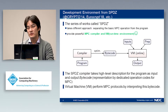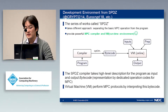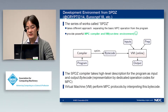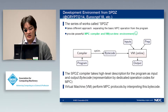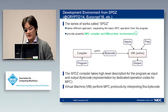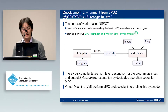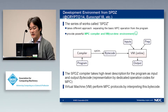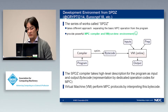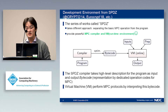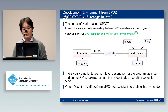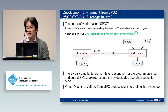In contrast to previous works, there is a series of works called SPICE, which took a different approach. Their approach separates the basic MPC operations from the high-level program description and provides software as an MPC compiler and virtual machine framework. The SPICE compiler converts high-level descriptions of MPC programs to bytecode, written using a dedicated instruction set for the SPICE MPC protocol, and the virtual machine performs MPC protocols by interpreting this bytecode.